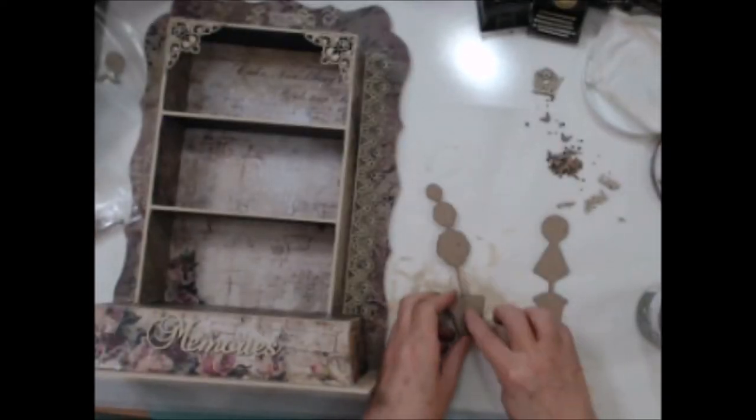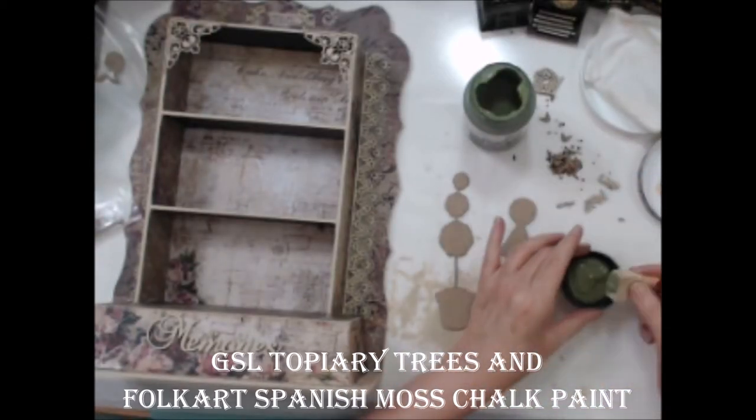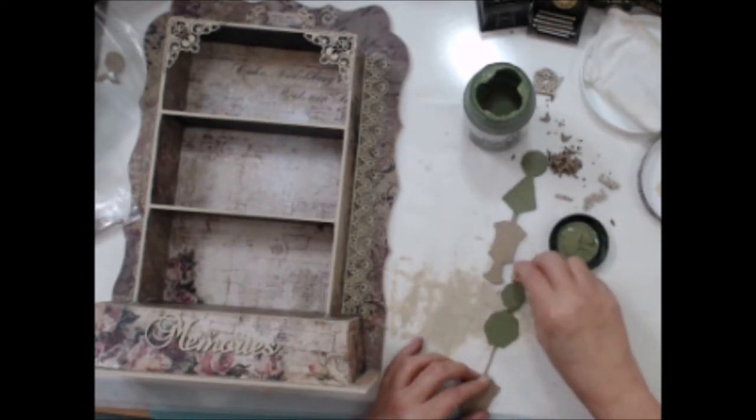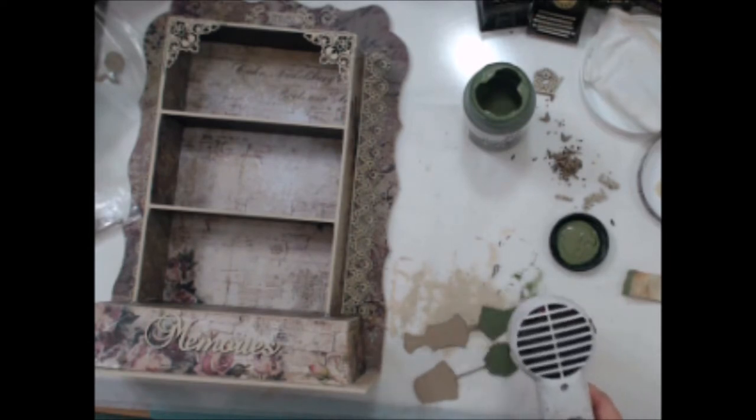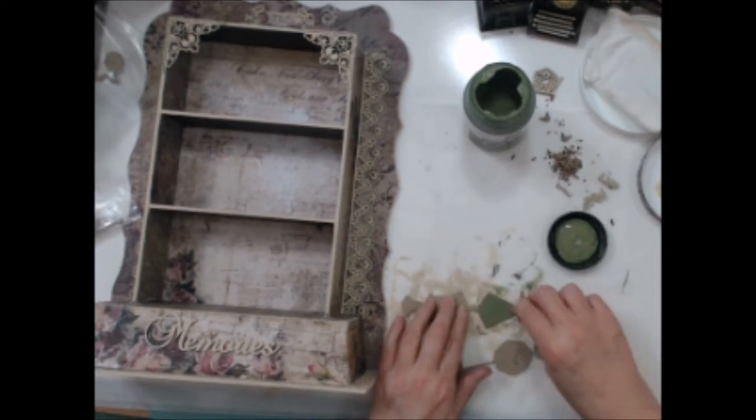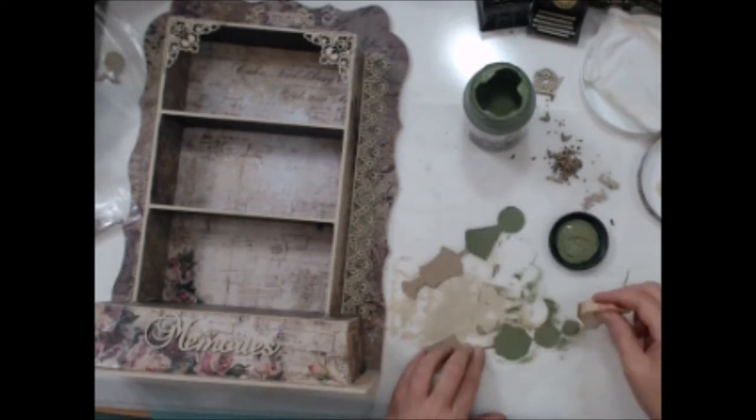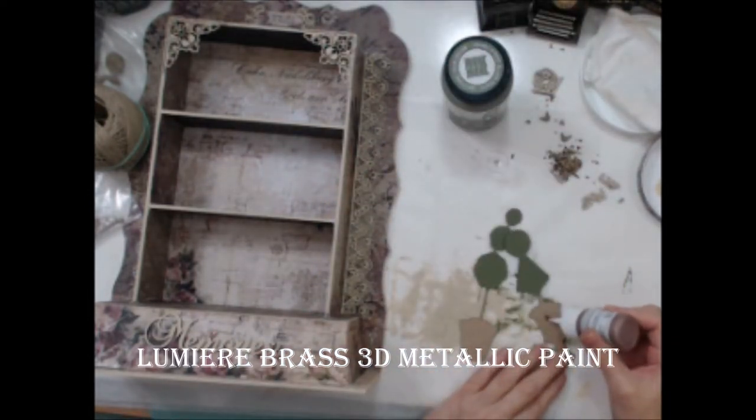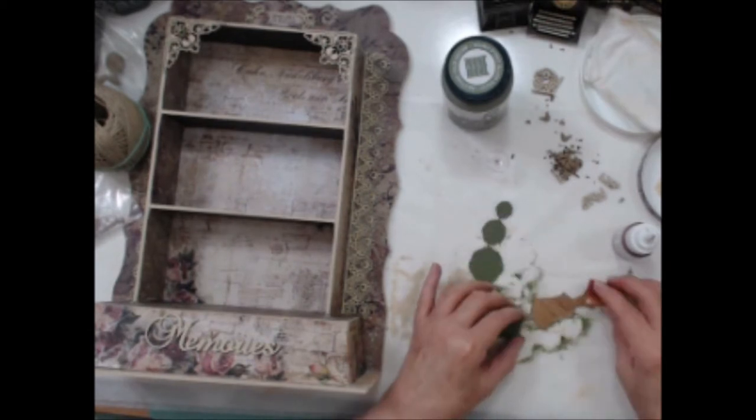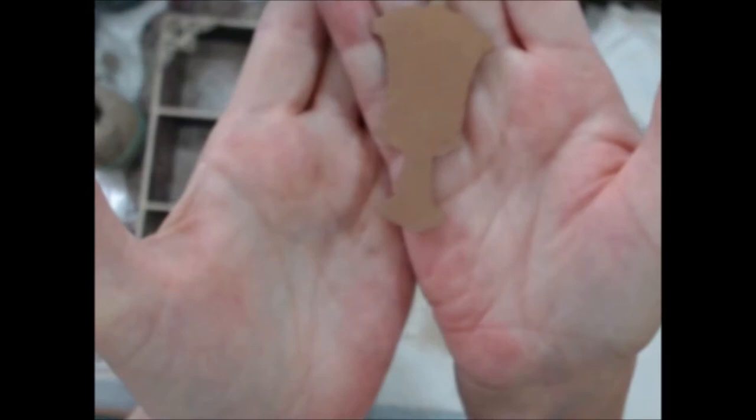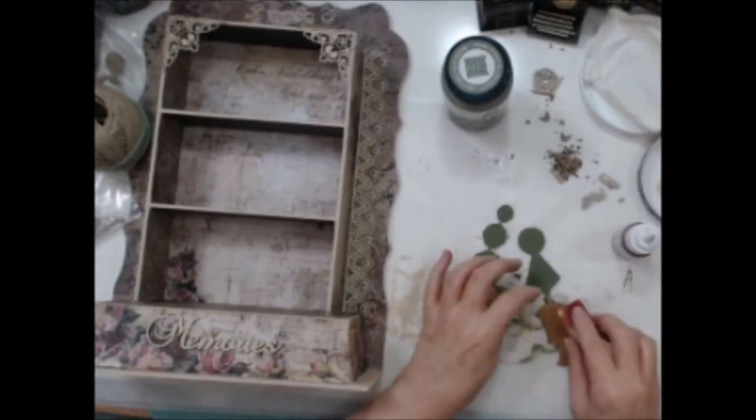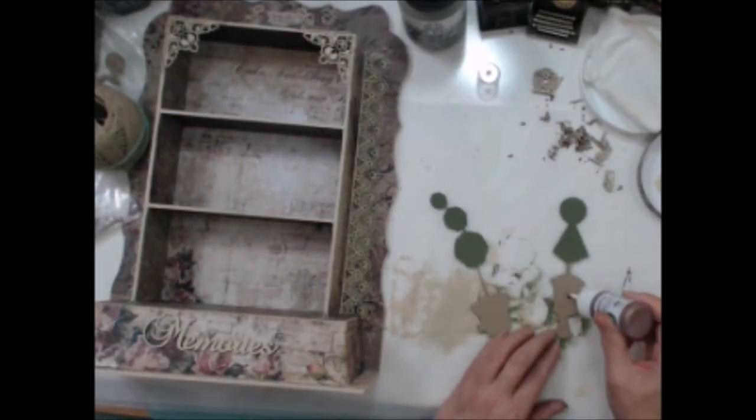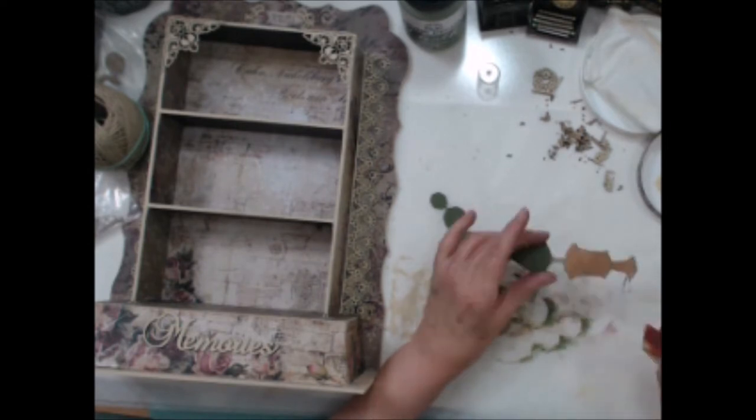Next, I decided these topiary trees would be really pretty added to either side of the shelves. So I painted the greenery portion with the Spanish moss chalk paint and dried them with my heat tool. Both sides need to be painted because they will be seen from the sides in the back. I used Lumiere 3D brass paint to dab the color over the pot portions. The dabbing motion with the sponge gave me lots of texture. Repeat this process on the reverse side of both pieces.